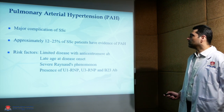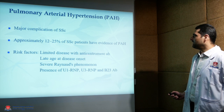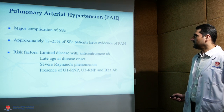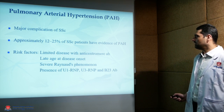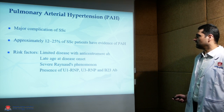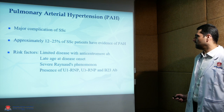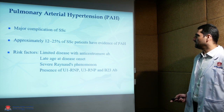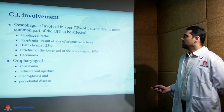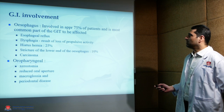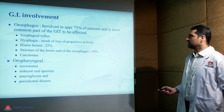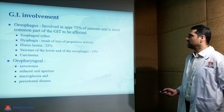Risk factors for pulmonary arterial hypertension include limited disease with anti-centromere antibody, late age at disease onset, severe Raynaud's, and presence of U1–U3 RNP and B23 antibody. GI involvement mainly involves the esophagus in the form of esophageal reflux, dysphagia, and hiatus hernia.